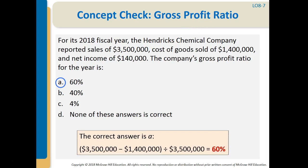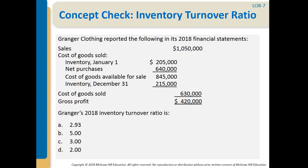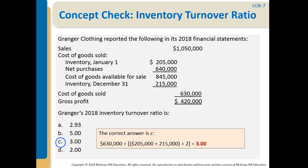The company's gross profit ratio for the year is 60%, 40%, 4%, or none of these. If we take $3,500,000 and subtract cost of goods sold, that difference divided by sales gives us a gross profit ratio of 60%. Next, Grandeur Clothing reported the following in its 2018 financial statements: sales, cost of goods sold, gross profit, beginning inventory of $205,000, cost available for sale of $845,000, and ending inventory of $215,000. To figure out the inventory turnover ratio, we take beginning plus ending inventory divided by 2 to get average inventory, then divide cost of goods sold by average inventory to get a ratio of 3.